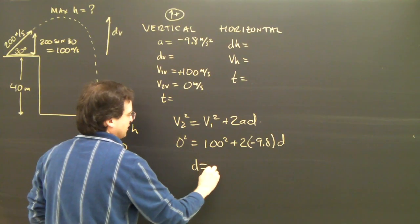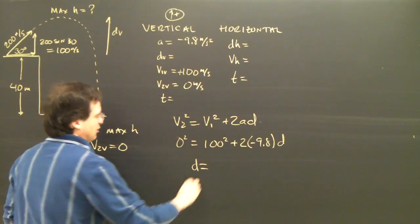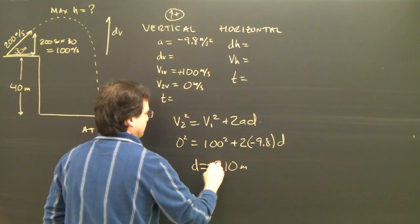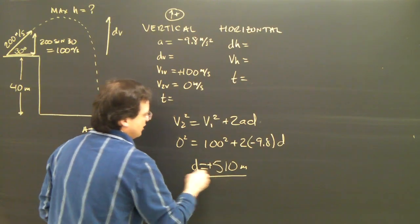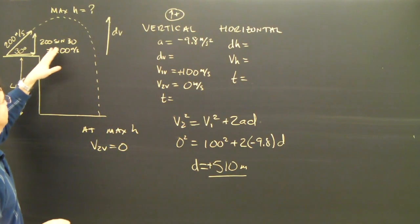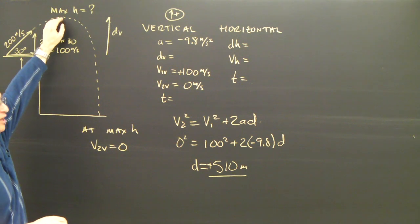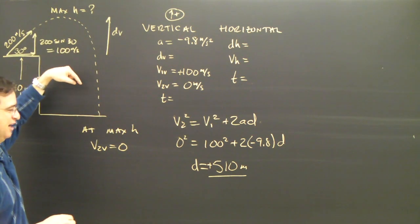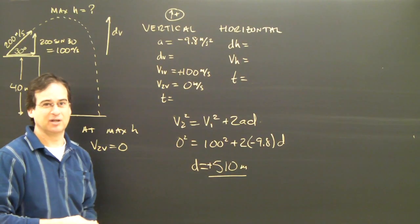I solve for d and I get 510 meters positive. That means when the projectile goes up, when it gets to the highest point and its vertical velocity is zero, it's now going to start to descend. Then the height is 510 meters.